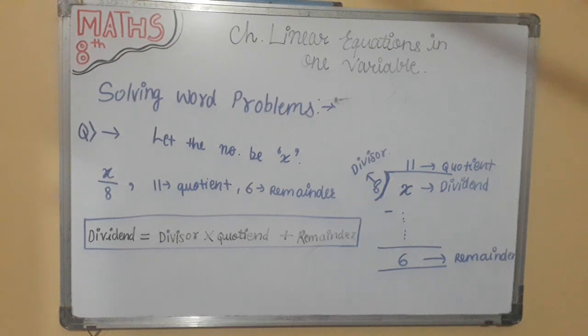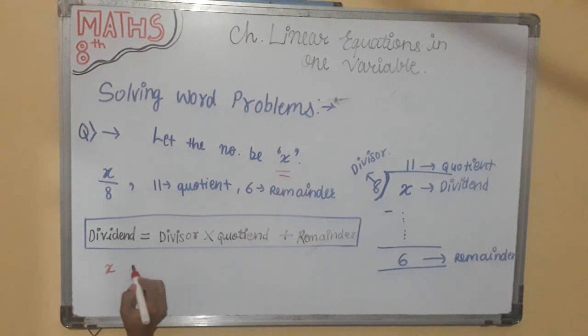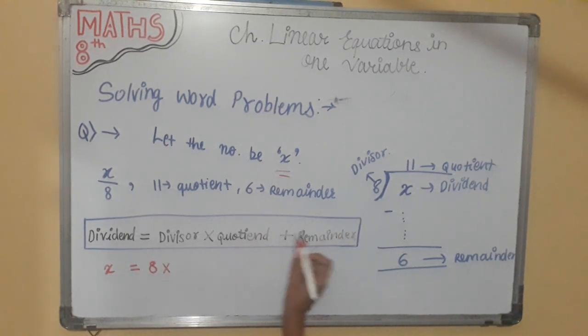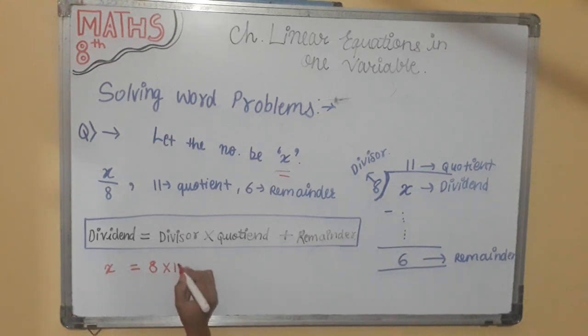Arranged like this. So here we don't know dividend and we have assumed dividend as x, so we will put x as it is. So this is equal to divisor. Divisor we know it is 8, 8 into quotient we know that is 11, into 11.